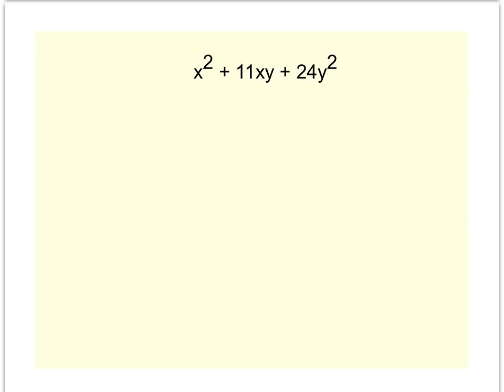I have one more that has two variables in it. The x squared is at the beginning, the y squared is at the end in the third term. I know that looks a lot scarier, but hopefully now you can see it's not that bad. x squared is x and x, y squared is y and y.